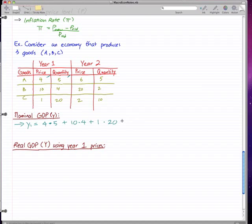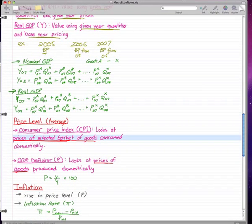In total we have 4 times 5 plus 10 times 4 plus 1 times 20, which if you work it out comes out to 80. Now remember that real GDP or capital Y uses the base price.